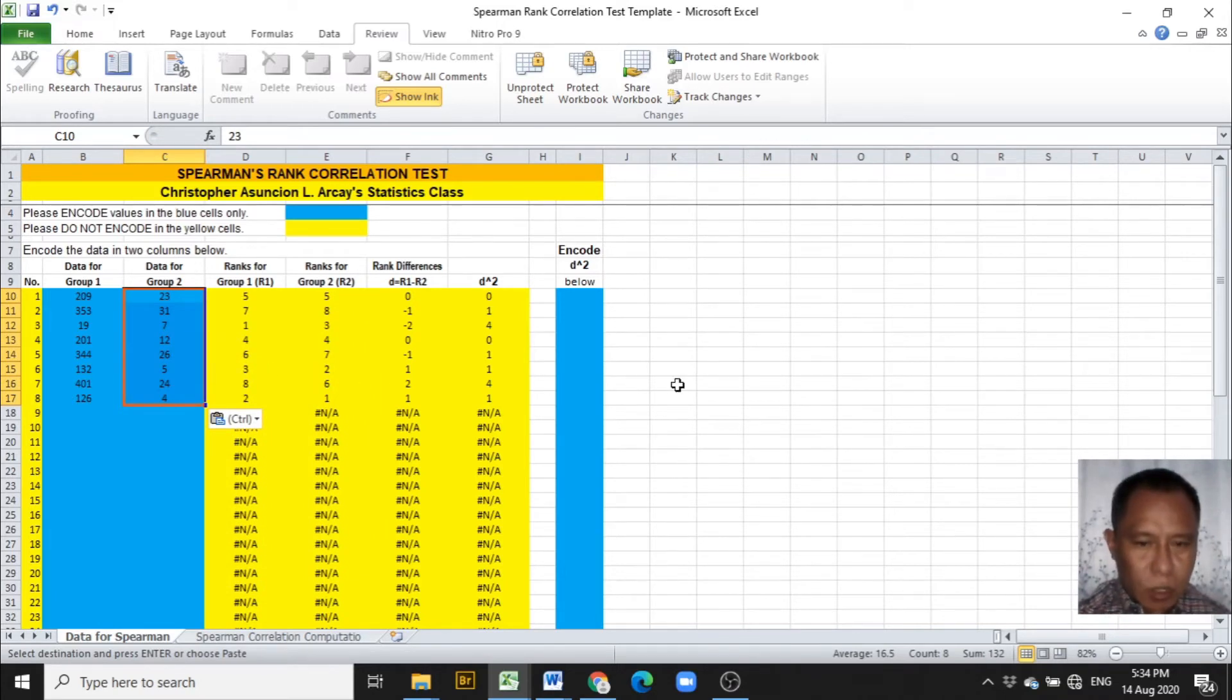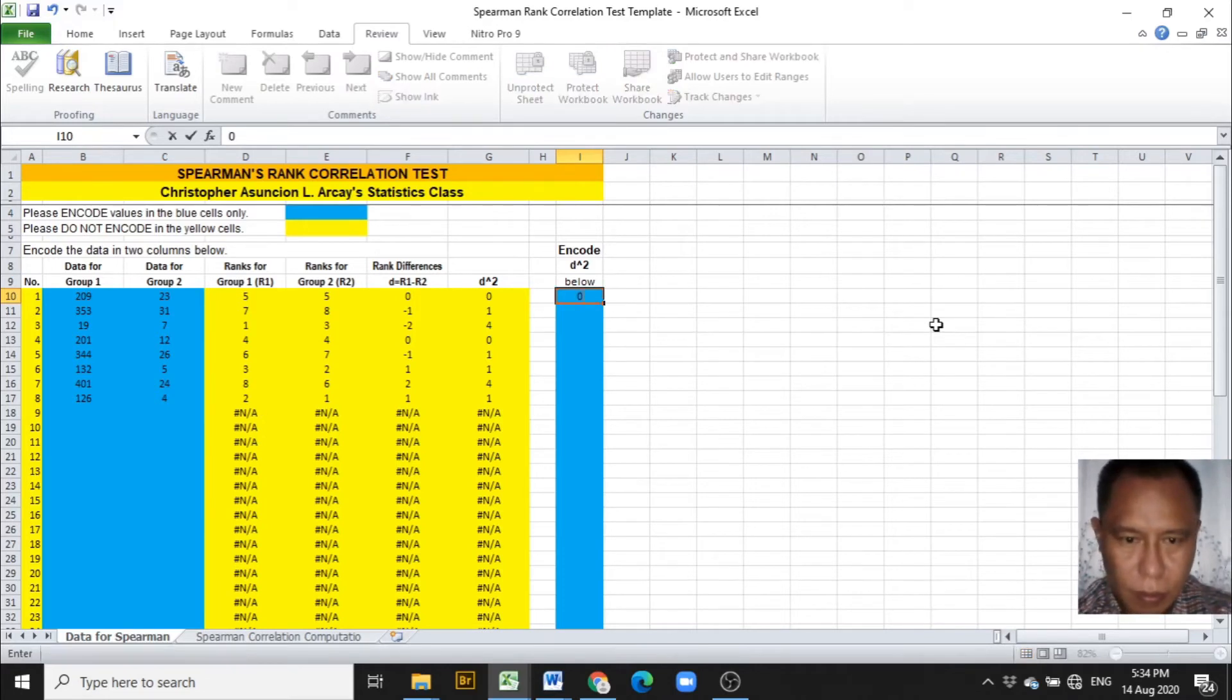The next step to do is to encode under the I column in the blue cells, encode the D squared values: 0, 1, 4, 0, 1, 1, 4, 1. And we are done copying the D squared values under the I column.